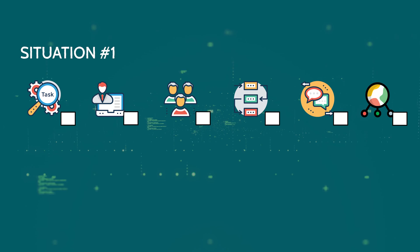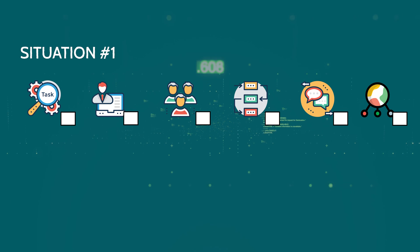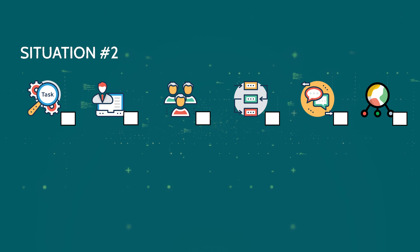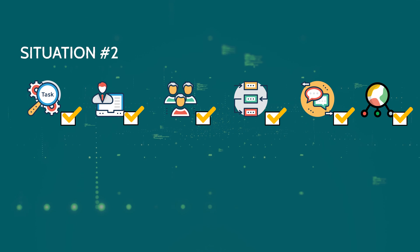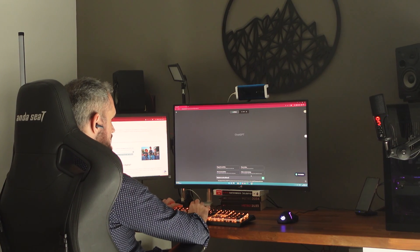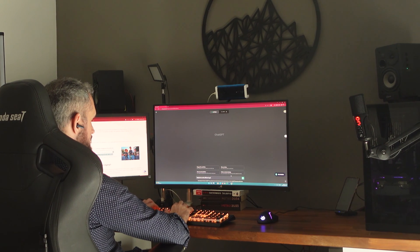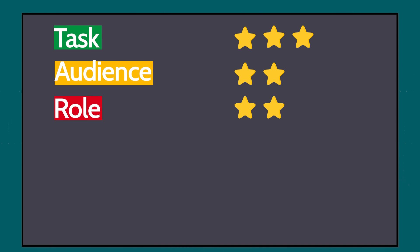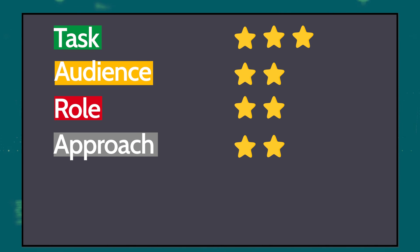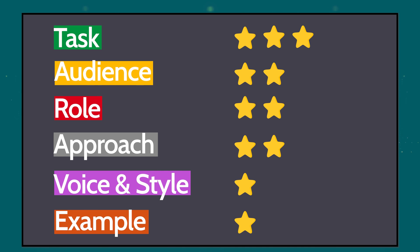Well, yes and no. Based on what you want the chatbot to generate, there are times you may need only a couple of these elements, whereas there are situations where you need all six for better results. Identifying what to include requires practice, as it is essentially a matter of experience. Defining the task is a must-have element, as are providing audience details, the role, and the desired educational approach. In contrast, setting the voice and style and providing an example are nice-to-have but less critical elements.